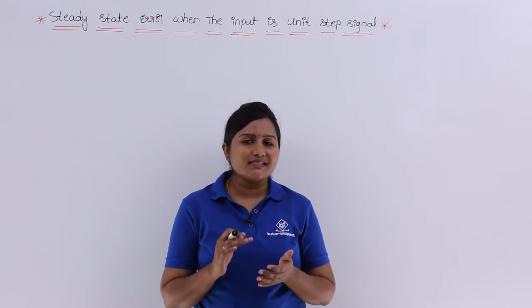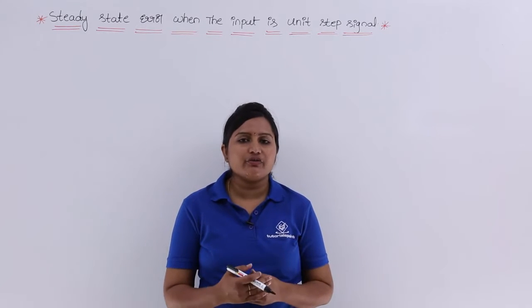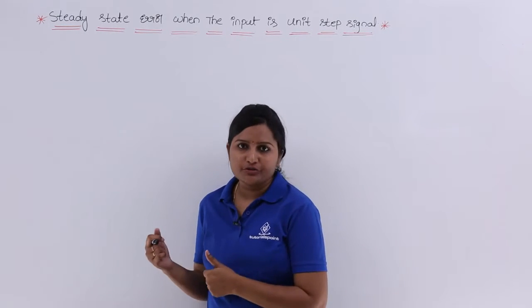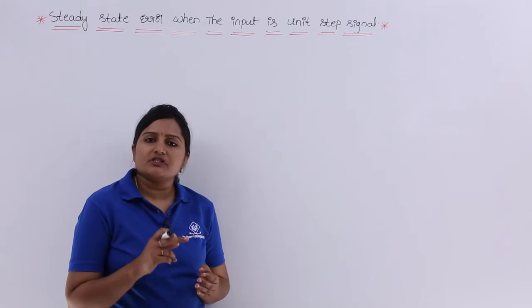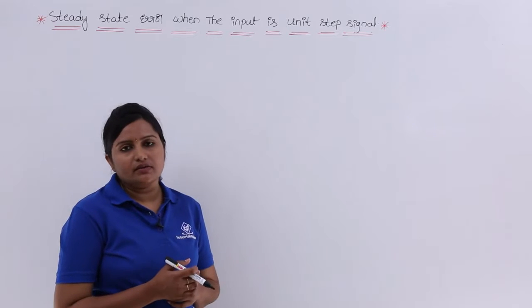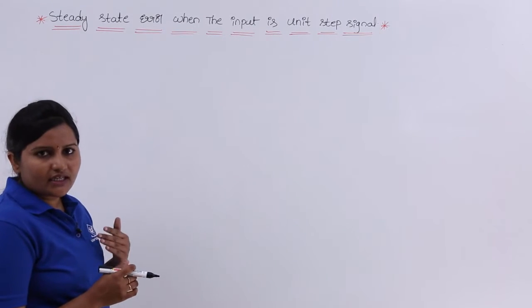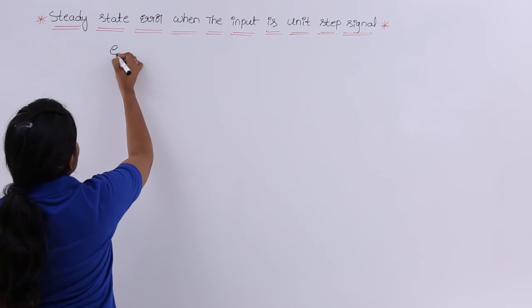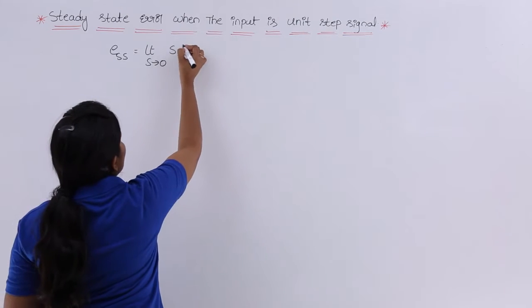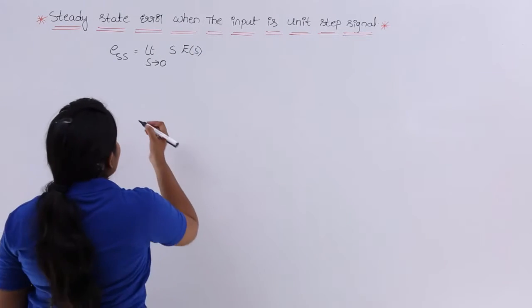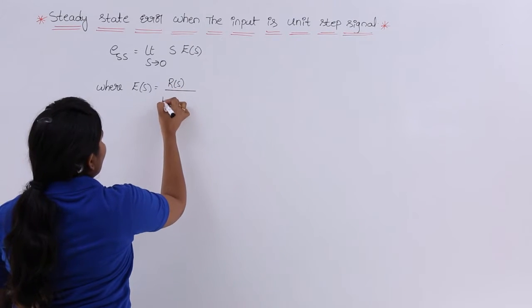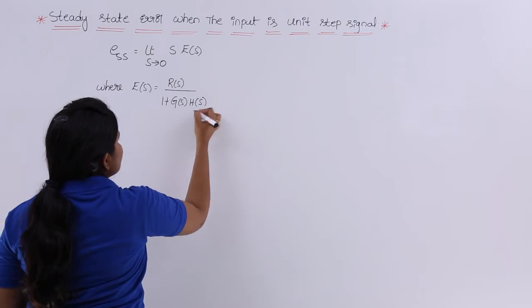In this video we are going to derive the steady state error when the system is excited with a unit step input. We previously discussed steady state error, static error constants, and type order of the system. According to the final value theorem, the steady state error is ESS = limit as s tends to 0 of s·E(s), where E(s) = R(s) divided by 1 plus G(s)·H(s).